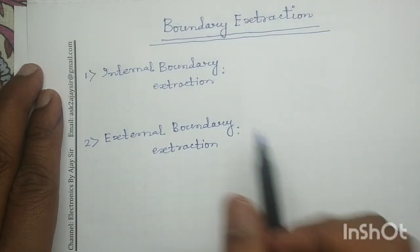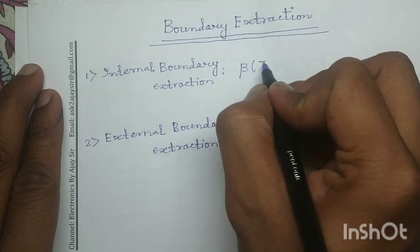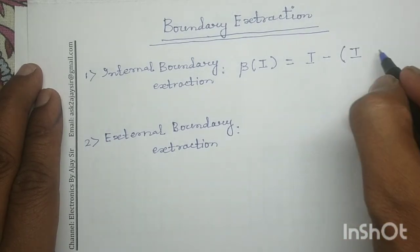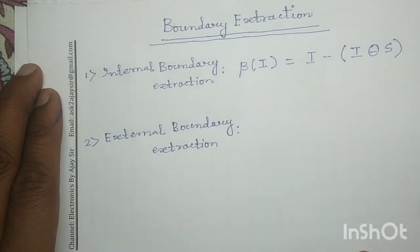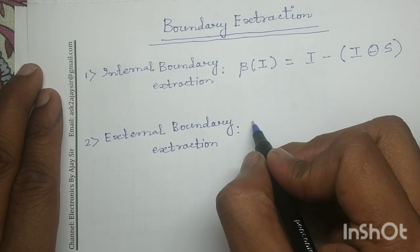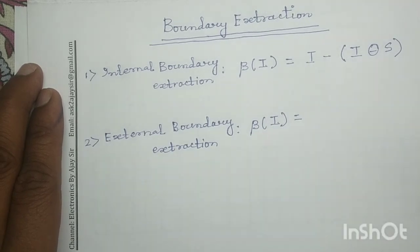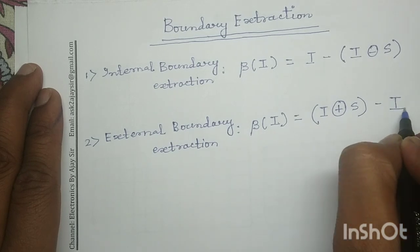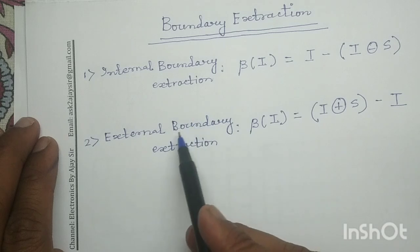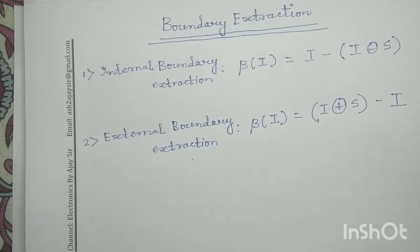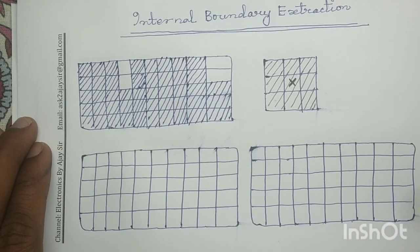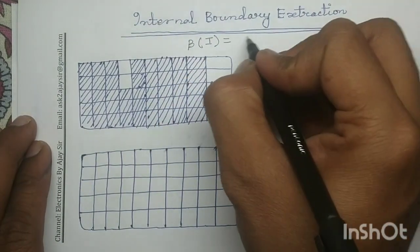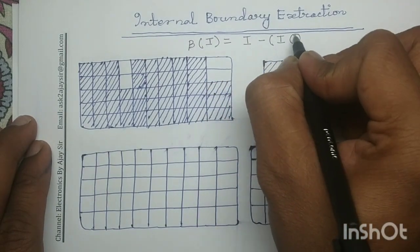The mathematical expression of internal boundary extraction is given as beta(I) = I minus (I erosion with S). The mathematical expression of external boundary extraction is beta(I) = (I dilation with S) minus I. Both of these methods — internal boundary extraction and external boundary extraction — we will discuss in this lecture.